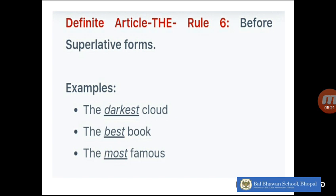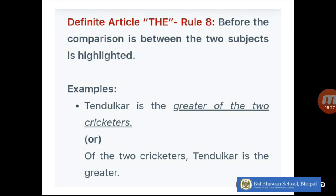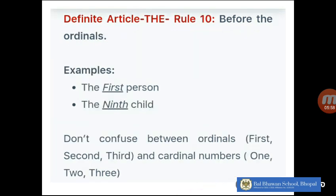The next rule is before superlative forms. When I'm talking about the superlative degree, I will use 'the' — the darkest cloud, the best book, the most famous. The next rule is before comparisons between two subjects. When I'm comparing two people I use 'the' — for example, 'Tendulkar is the greater of the two cricketers.'